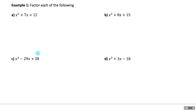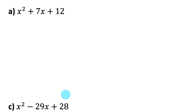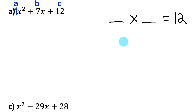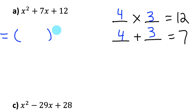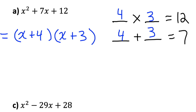Part a: x squared plus 7x plus 12. We need to find numbers that multiply to 12 and add to 7. The pair 4 and 3 satisfies both: 4 times 3 is 12, and 4 plus 3 is 7. So we can rewrite this in factored form as x plus 4 times x plus 3. You can check by expanding back out to recover the original expression.